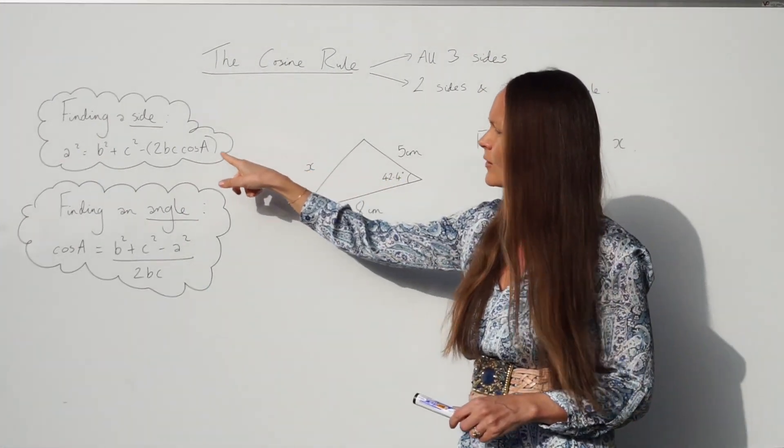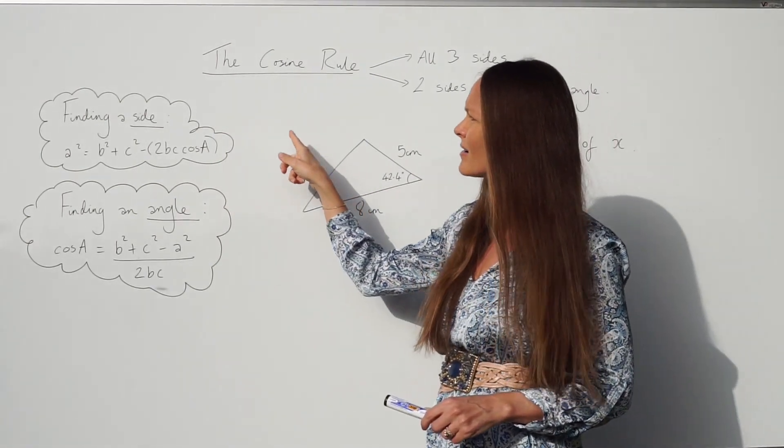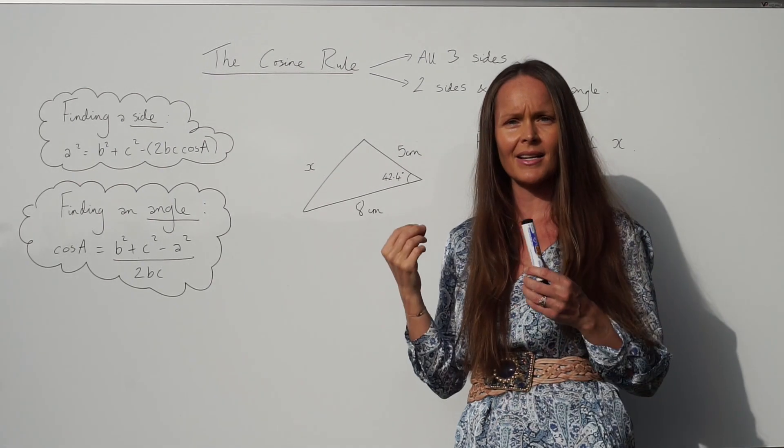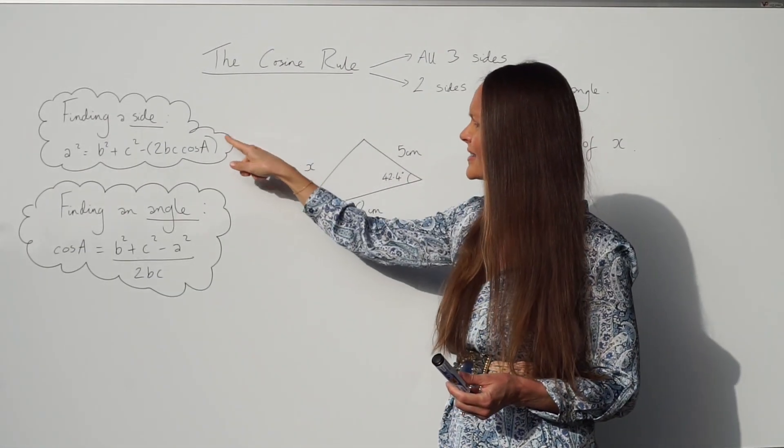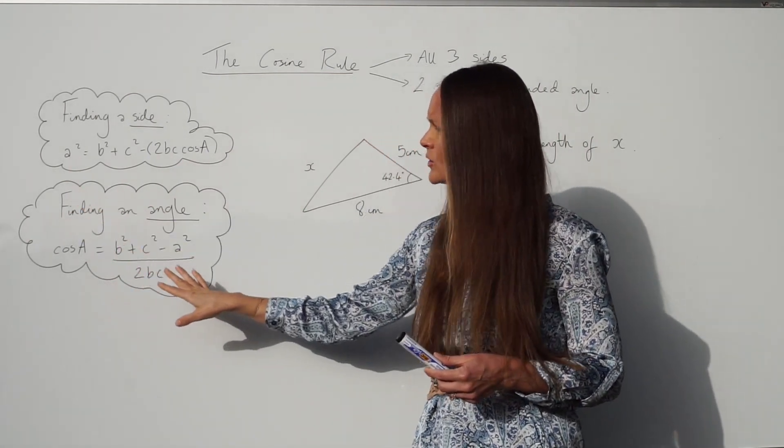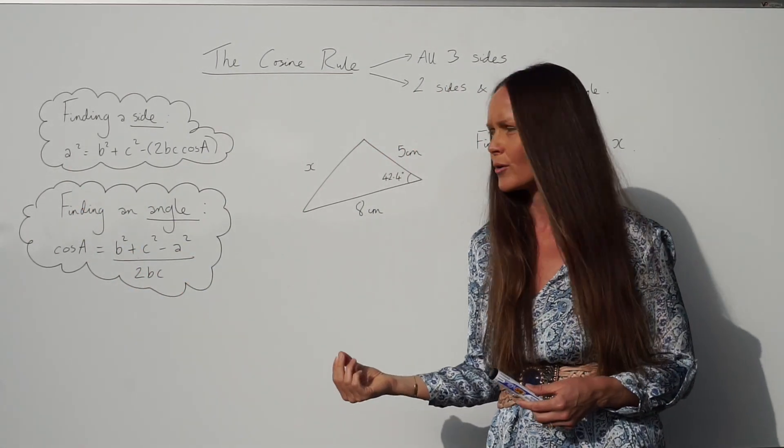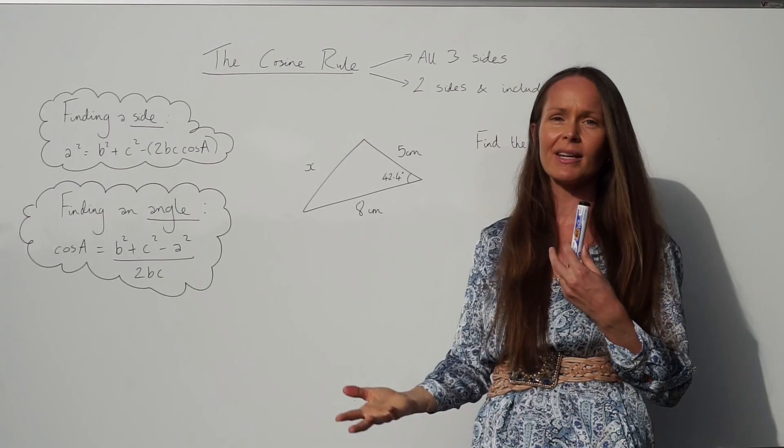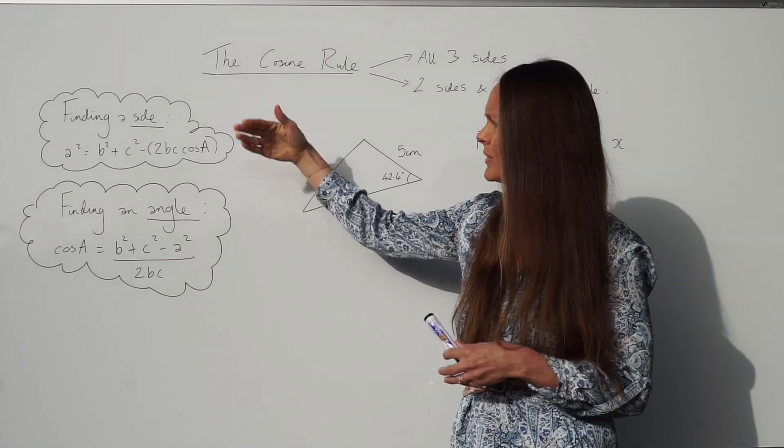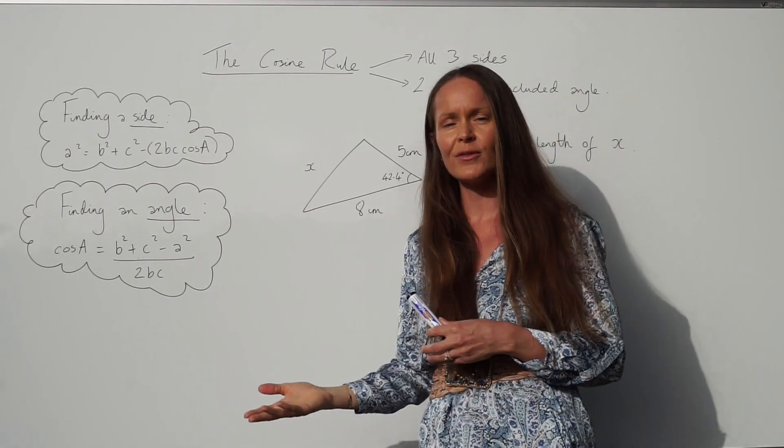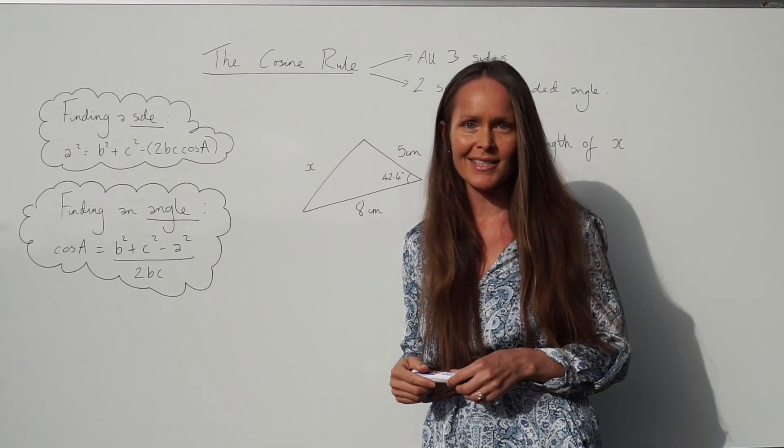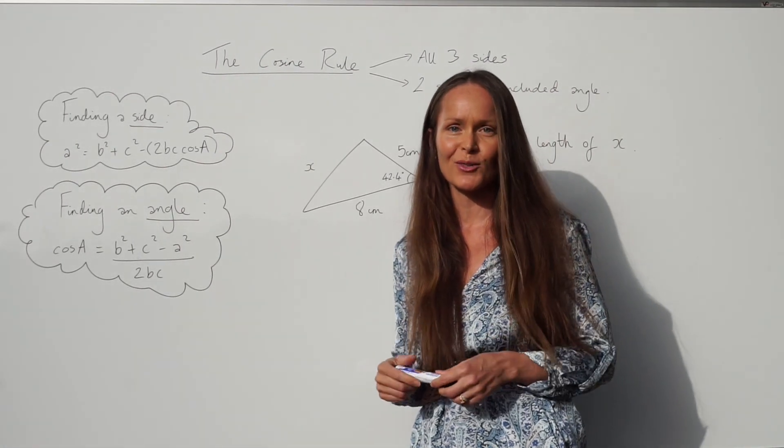Over here I've written down the formula, so here it's rearranged in its ideal format to find the length of a side in a triangle and here it's exactly the same, it's just being rearranged so that it's in the ideal format to find the angle in a triangle. Okay, so if you're good at rearranging formulae you can just remember one of them and rearrange it to find the other one, and if you're not confident then you can just remember both of them. And if you're really lucky your exam board might give this to you at the start of your paper.